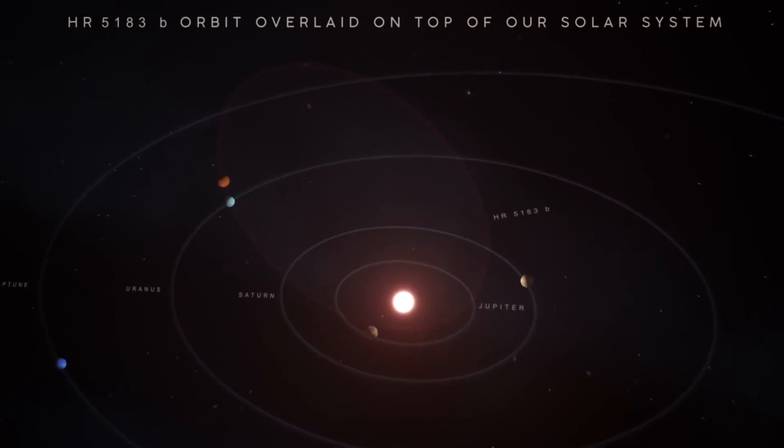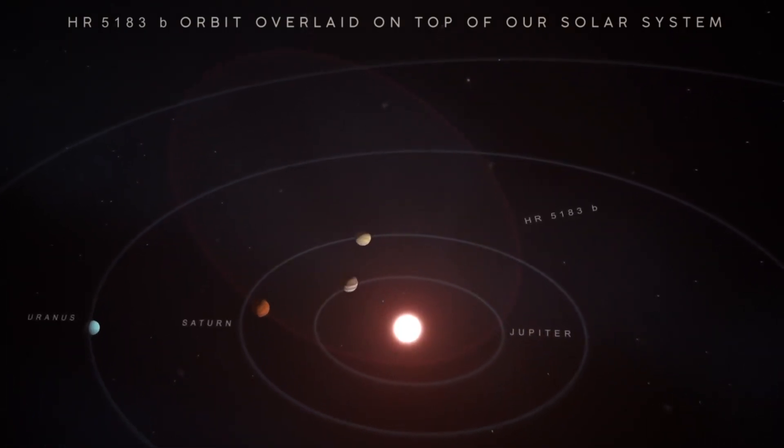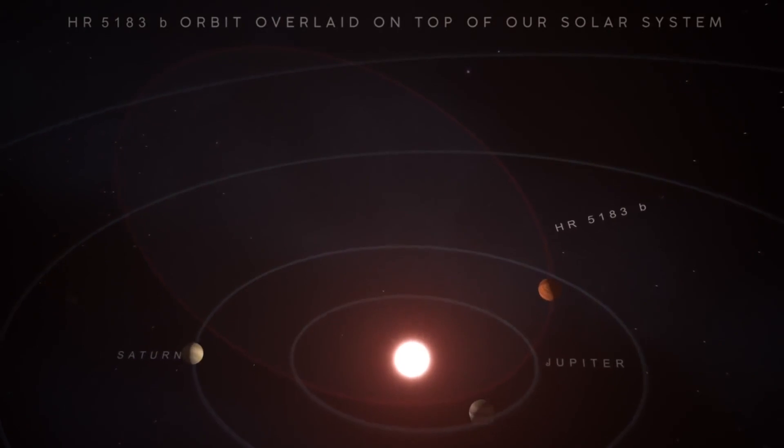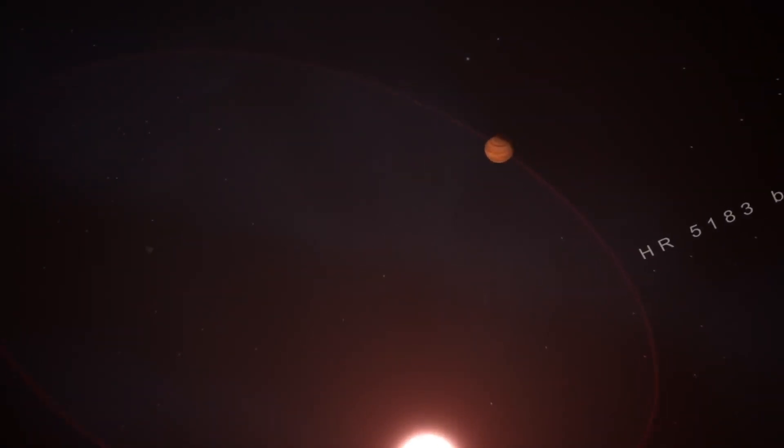That ambles round in a leisurely 74 years, which is far more than Saturn's 29 Earth years, but close to Uranus's 84 years.